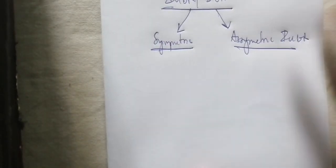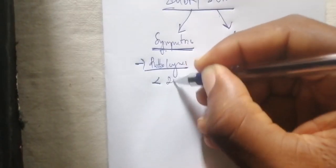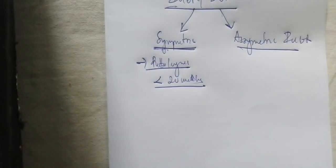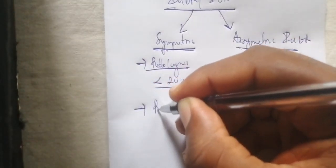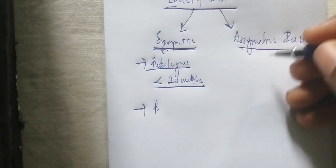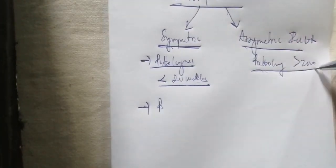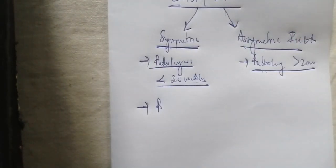For symmetric intrauterine growth restriction, it is usually associated with pathologies which occur before 20 weeks of gestation. If you have pathologies in the mother that occur before 20 weeks of gestation, it is going to cause symmetric intrauterine growth restriction. When pathologies occur after 20 weeks of gestation, it is going to result in asymmetric intrauterine growth restriction.